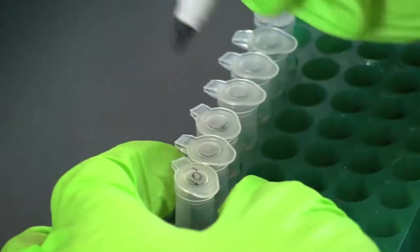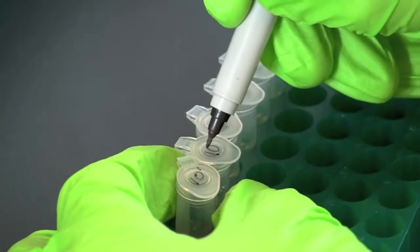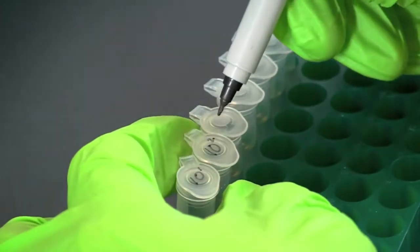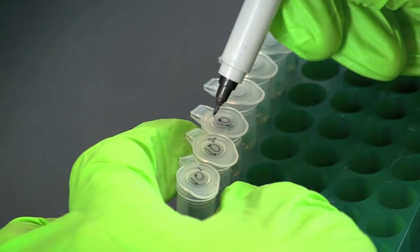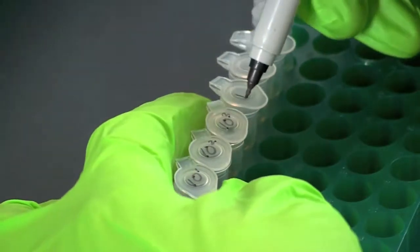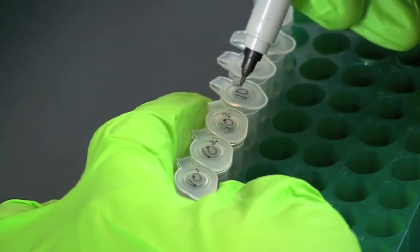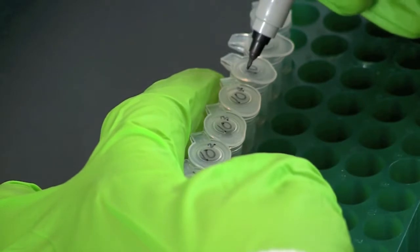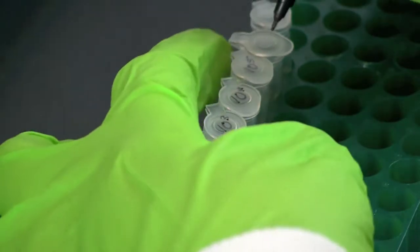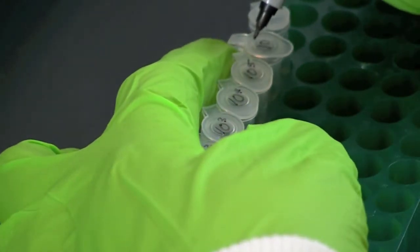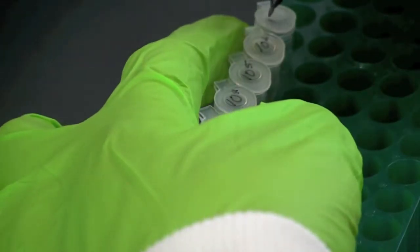Label seven sterile microcentrifuge tubes with the dilution factors 10 to the first, 10 to the second, 10 to the third, 10 to the fourth, 10 to the fifth, 10 to the sixth, and 10 to the seventh.